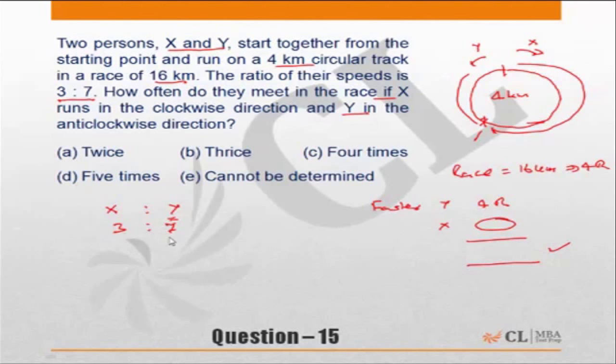So when Y does 7 rounds, X does 3 rounds. Or when Y does 4 rounds, X will do 3/7 × 4 rounds, which is equal to 12/7, which is approximately 1.7.